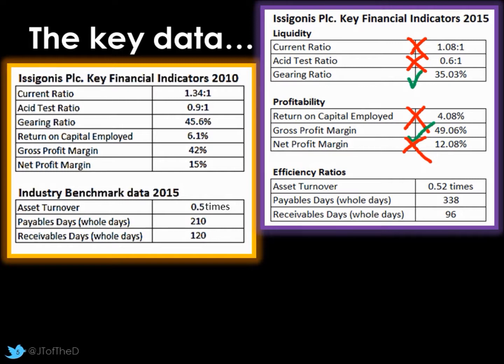Our net profit margin is actually down from 15% to 12%. So there is some inefficiency here — we're getting the gross profit but somewhere in the process, through overheads, we're losing that. We might be spending a lot on marketing, though in a real detailed case study you might have that information to confirm it.